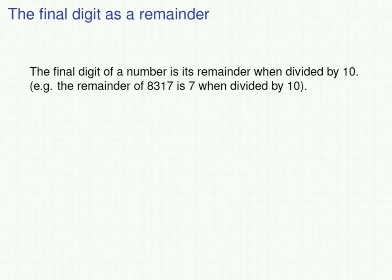The final digit of a number has an interpretation as its remainder when it's divided by 10. For example, the remainder of 8,317 when divided by 10 is 7, which is the same as its final digit.